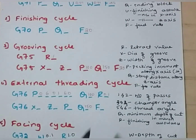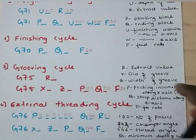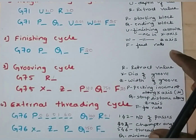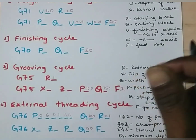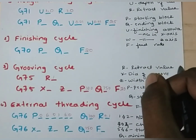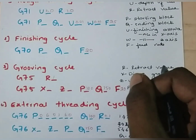These are the syntaxes for rough turning cycle, finishing cycle, grooving cycle, external threading cycle, and facing cycle. If you know these syntaxes, we can easily write the program for a given geometry. Thank you.